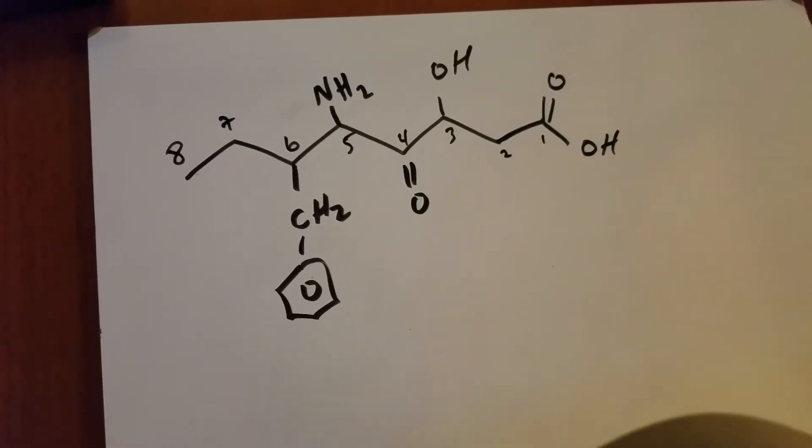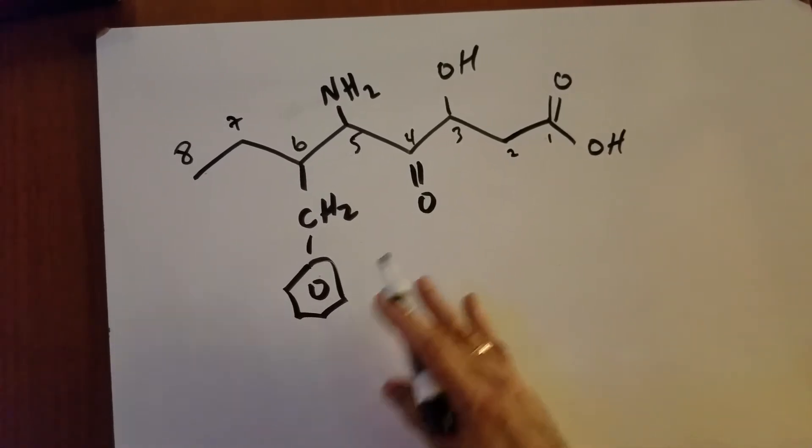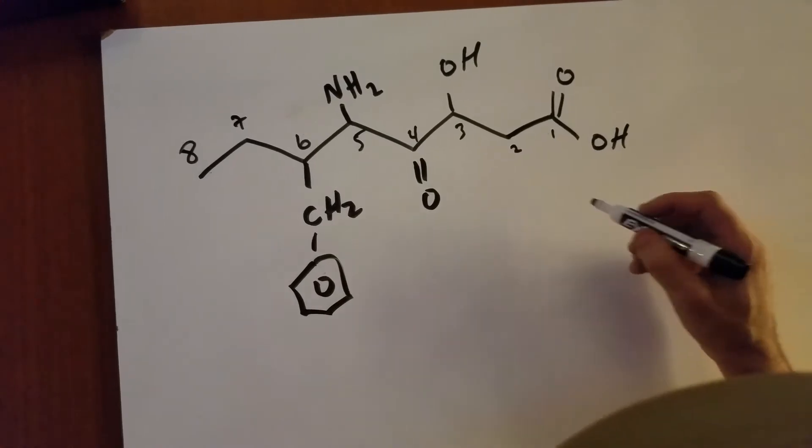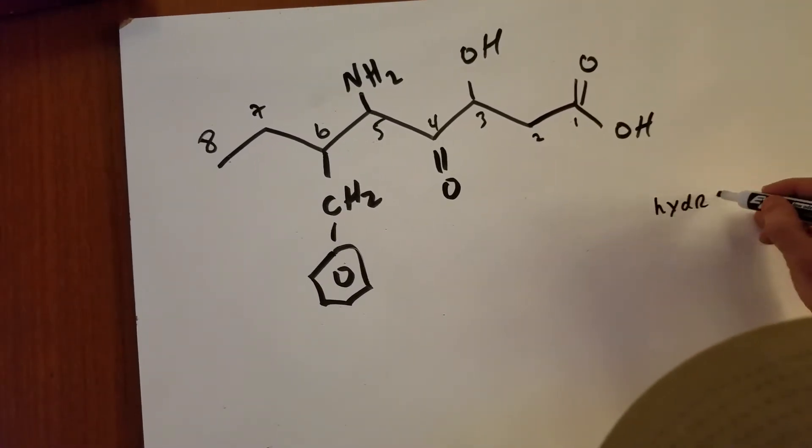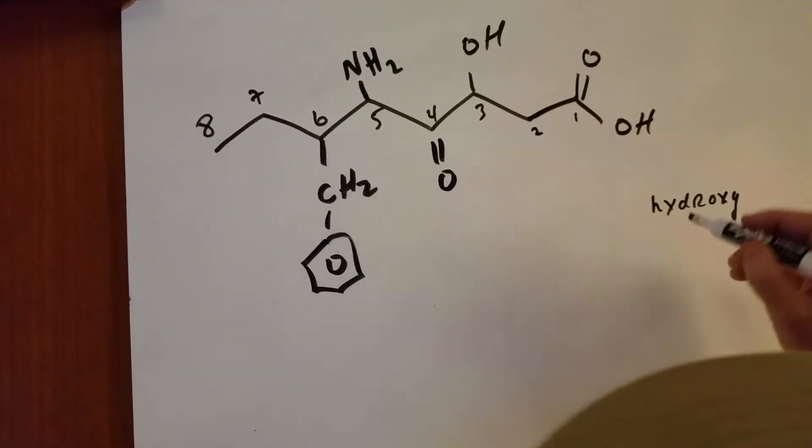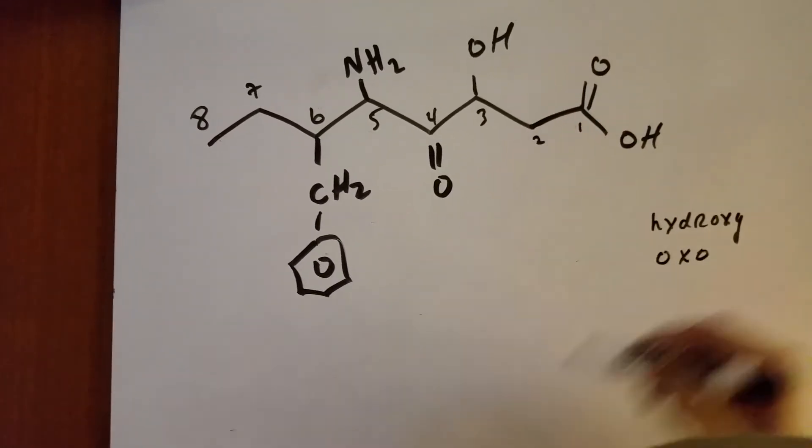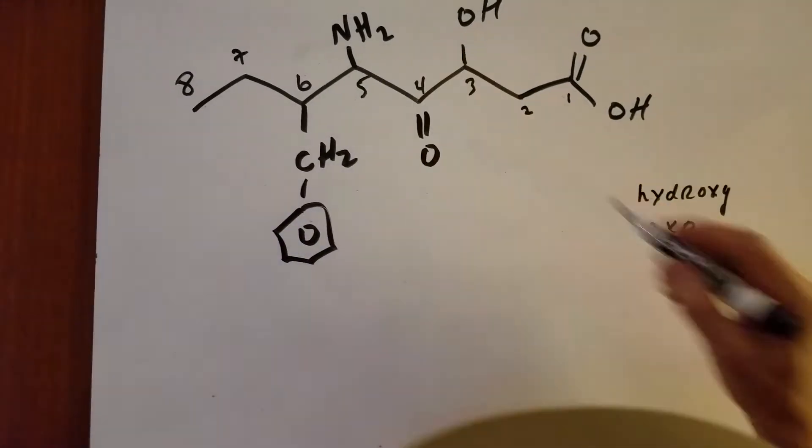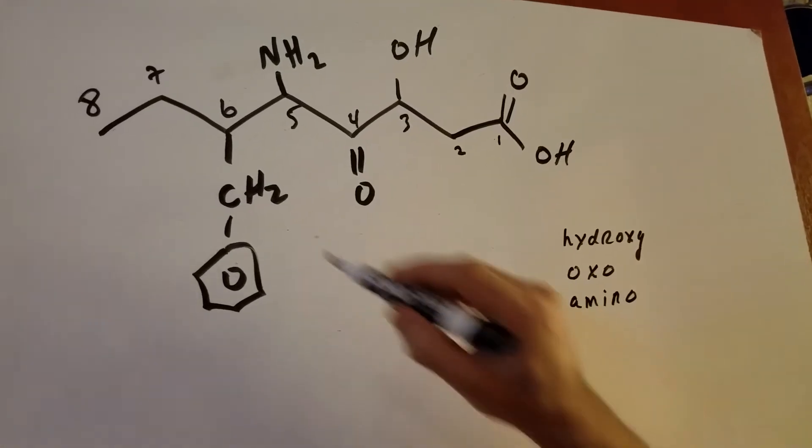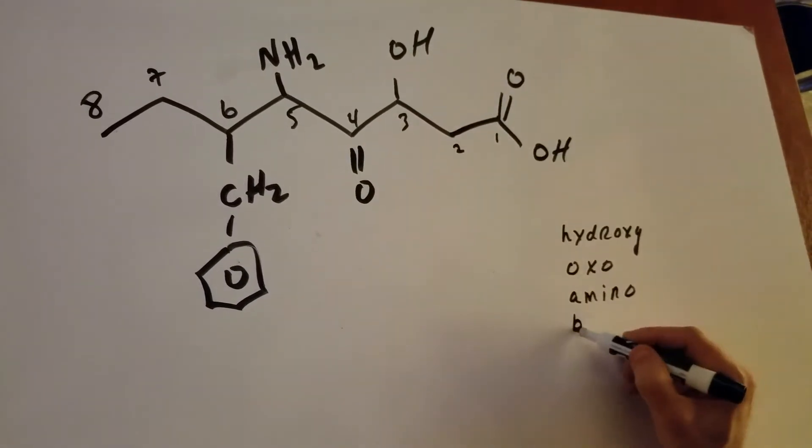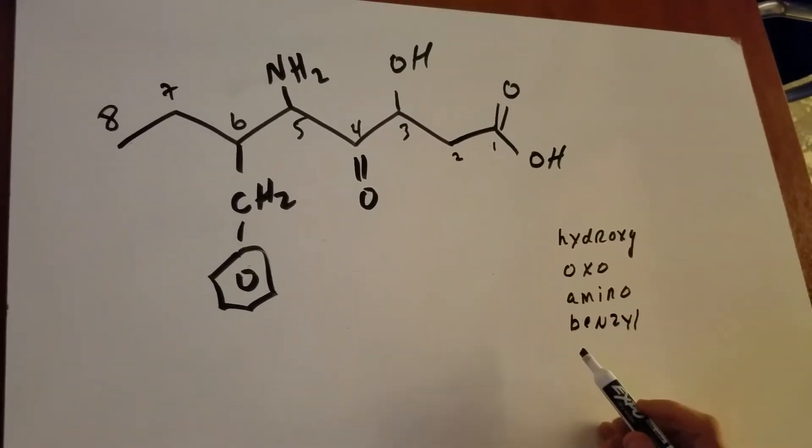My best recommendation for you is let's see what all the different functional groups are. Well first of all, number 3 we know is a hydroxy group because it's an OH group. If you see a carbonyl group, that's going to be called oxo. The NH2 is going to be called an amino group. And this group, which most kids would get wrong, is called the benzyl group.